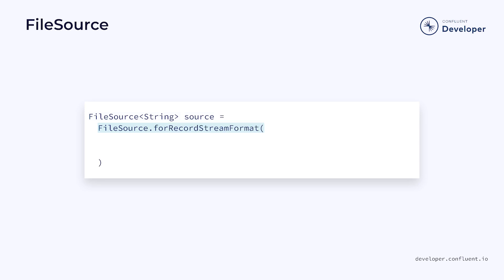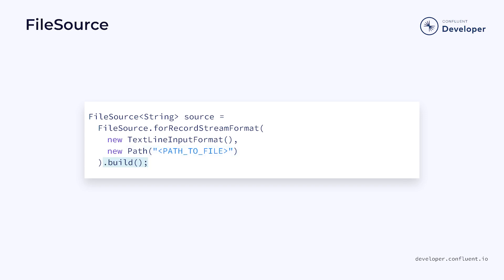A more common technique for a production application is to stream data from a file. We can use the FOR RECORD STREAM FORMAT method to stream records one at a time from our file. We just need to supply a format for each record — in this case, we are using lines of text — and we need to supply a path to the file. Finally, we build the source. Because the file is finite, the stream will terminate once it reads to the end. However, it's possible to create sources that monitor files for changes and continue to stream the data.